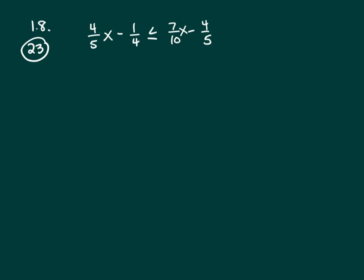But if you don't see that, this is the process to find your LCD. You've got a 5, a 4, and 10. And you need to break these down to their prime factorizations. Well, 5 is already prime. 4 is 2 squared. And 10 is 2 times 5.